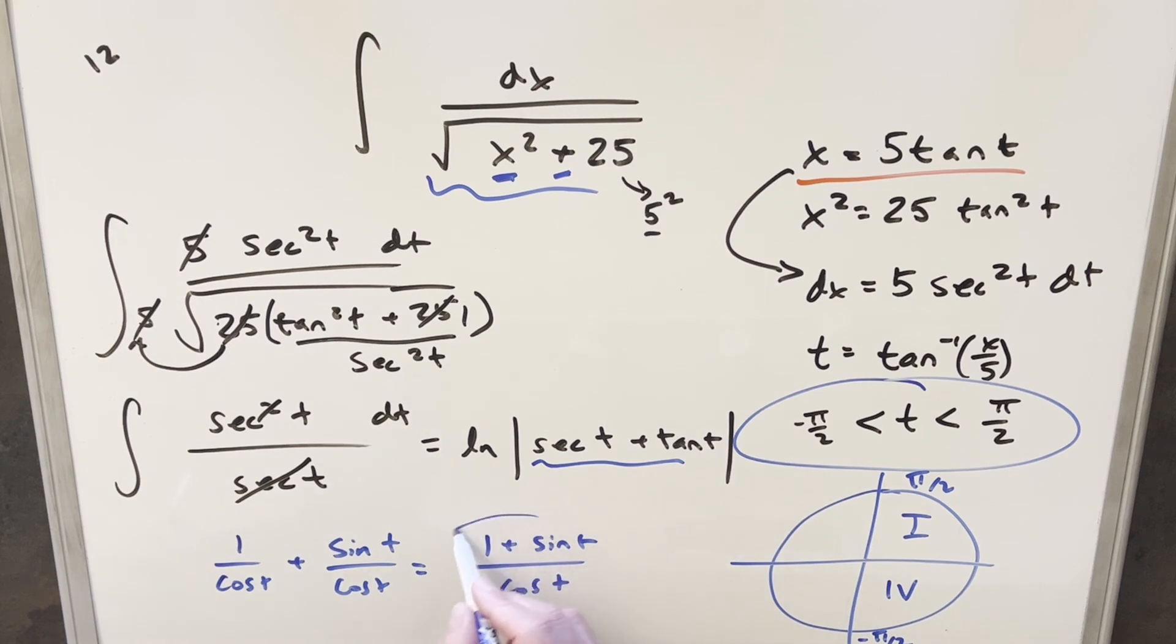Well, then we're going to have 1 plus sine t over cosine t. But you'll notice the numerator always has to be positive. The sine is never less than negative 1. And cosine of t, again, is always positive here. So again, we can get rid of absolute values right here. We don't need that.